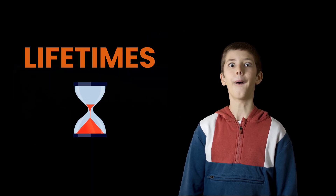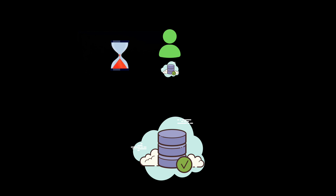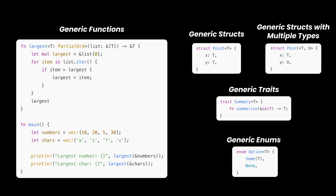Ten: lifetimes and borrow checking. Lifetimes can be a little tricky at first, but they're essential for making Rust so safe. Lifetimes ensure that references are valid and prevent dangling pointers when you're borrowing data. Lifetimes enforce that the data lives long enough to satisfy every reference.